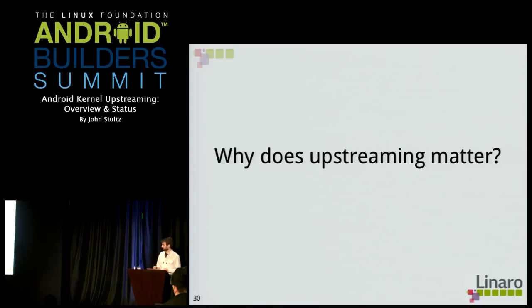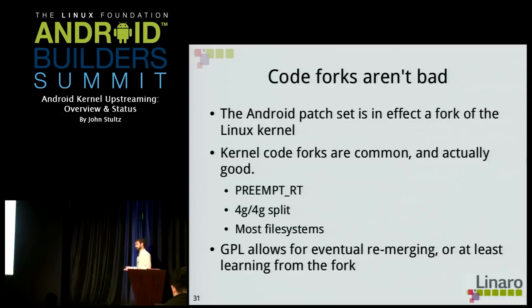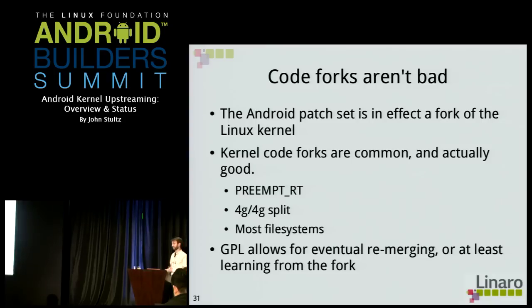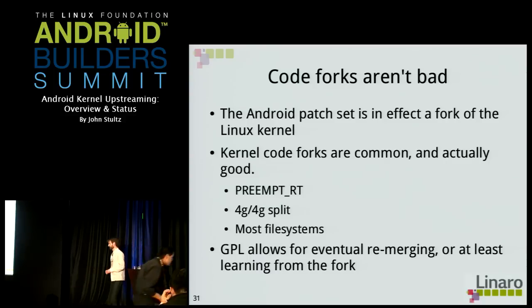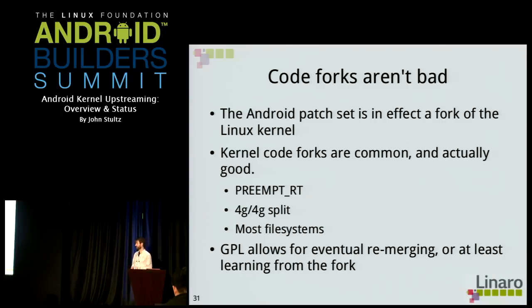Why bother with upstreaming? Comments claim Google forked the Linux kernel, but that's how Linux kernel development works — developers create experimental areas, maintainers observe how they go, and if the code continues being worked on it's more likely to go upstream. There are many precedents: the preempt-RT patch set has been out of tree for seven years with core kernel maintainers focused on it, always generating more work. The 4G/4G split kernel was shipped by RHEL but became unnecessary when x86-64 became common. Most file systems are done out-of-tree for a while — ext3 was carried out of tree by Red Hat before it was considered stable enough to merge. The GPL allows these forks to eventually be reconciled.